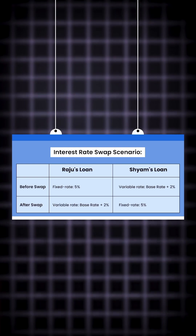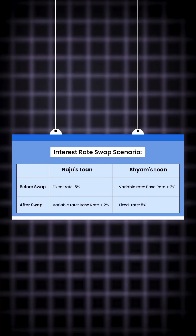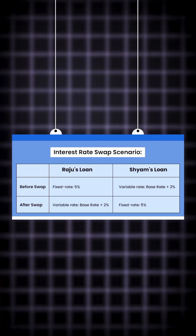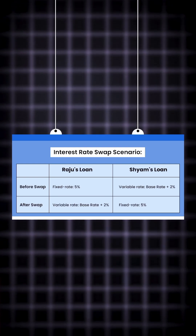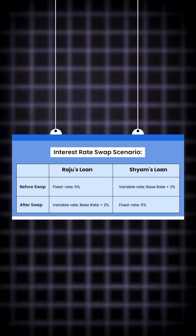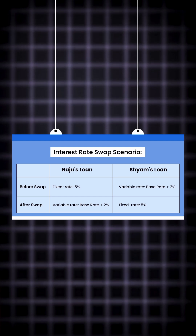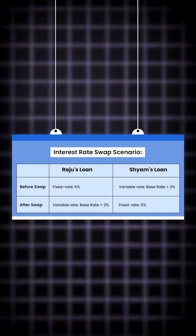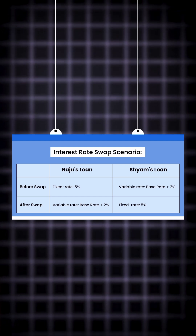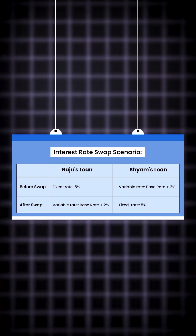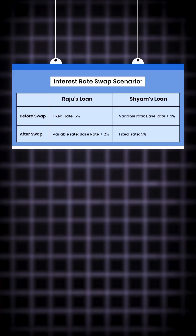Before the swap, Raju has a fixed rate loan while Shyam has a variable rate loan. After the swap, the interest payments are exchanged, with Raju now paying Shyam's variable rate and Shyam now paying Raju's fixed rate.